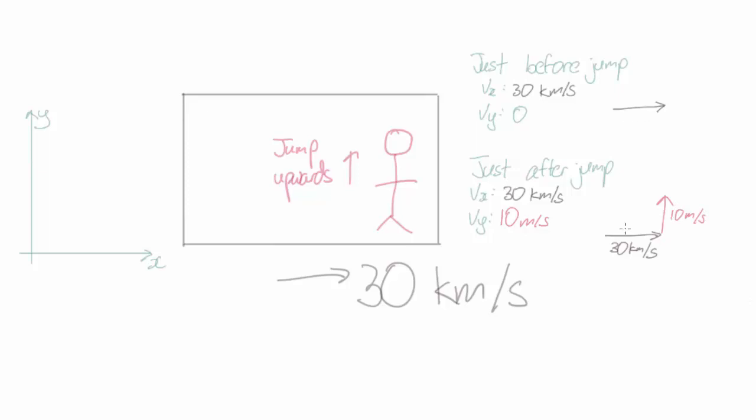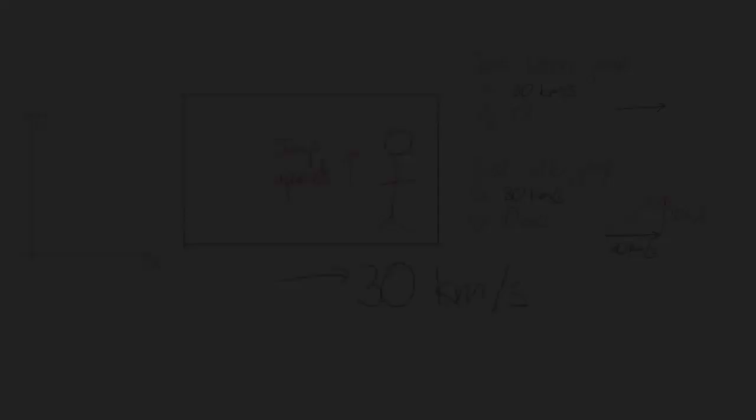So overall, my velocity is now diagonal. It has a 30 kilometer per second component and a 10 meter per second component. And so because of that, this is the train and this is you, you will move with the train during the jump. And so from your point of view, you will land exactly where on the train you started.